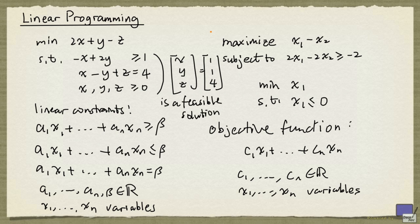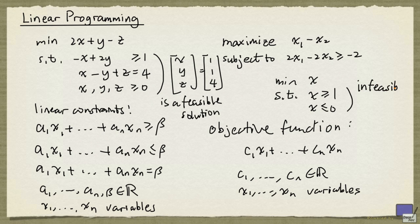It is possible for a linear programming problem to have no solution. In other words, it is possible to come up with a set of constraints no assignment of values to the variables will satisfy. Here is an example. Minimizing x subject to x at least 1 and x at most 0. There is no number that is simultaneously at least 1 and at most 0. So this problem has no feasible solution and we call this problem infeasible.